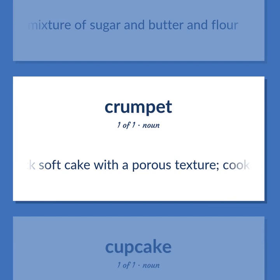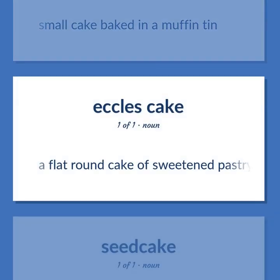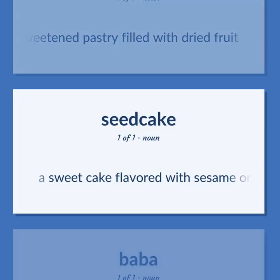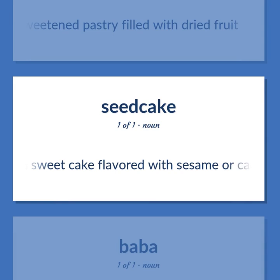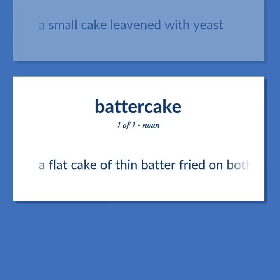A thick soft cake with a porous texture, cooked on a griddle. Small cake baked in a muffin tin. A flat round cake of sweetened pastry filled with dried fruit. A sweet cake flavored with sesame or caraway seeds and lemon. A small cake leavened with yeast. A flat cake of thin batter fried on both sides on a griddle.